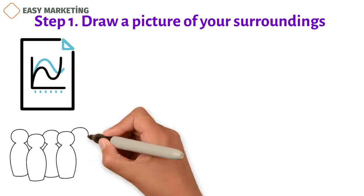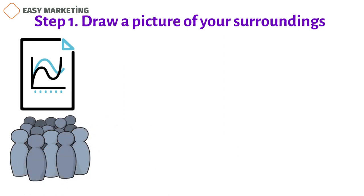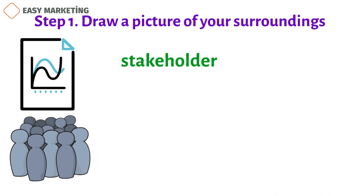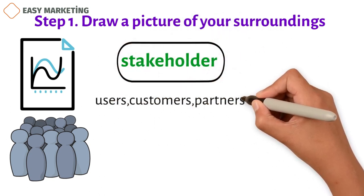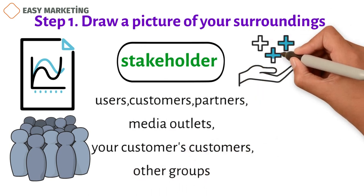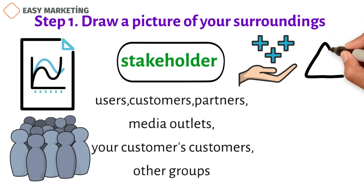Step 1. Draw a picture of your surroundings. The map of your business ecosystem is a diagram that shows how all of the people who will use your product will interact with each other. You might have more than one type of user who uses the product. Each stakeholder should be shown by a box or circle. This includes users, customers, partners, media outlets, your customers' customers, and other groups. Then, write down the benefits that people will get from using your product. Don't forget that value can also be vague. Using the money that the customers of your customers send you as an example.